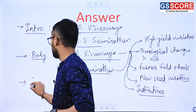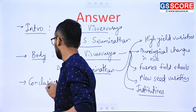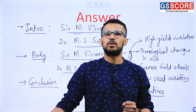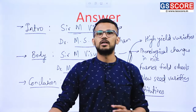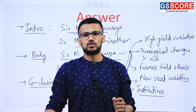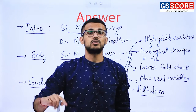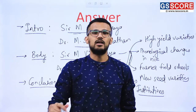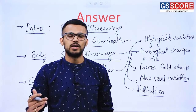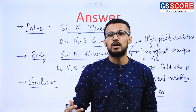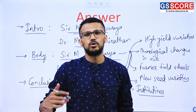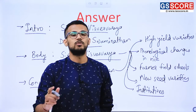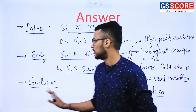In the conclusion, we can again highlight the contributions and benefits in short. Because of the contributions of Sir M. Vishweswaraya, we are able to carry out cultivation on huge land because of the availability of irrigation, and that has also helped in the supply of drinking water. Because of his vision, we are able to use flood mitigation in disaster management even today. For Dr. M. S. Swaminathan, because of his vision, we have achieved not only self-sufficiency but are also one of the important exporters of food grains and food resources to other countries.